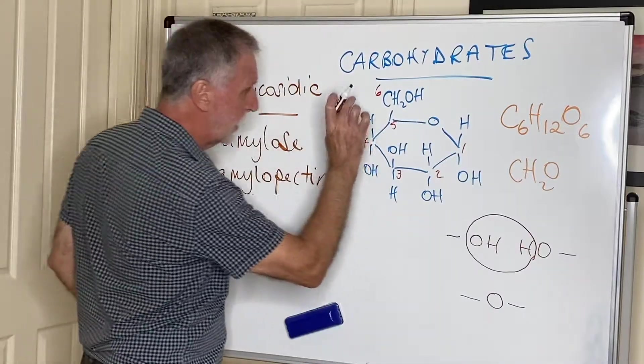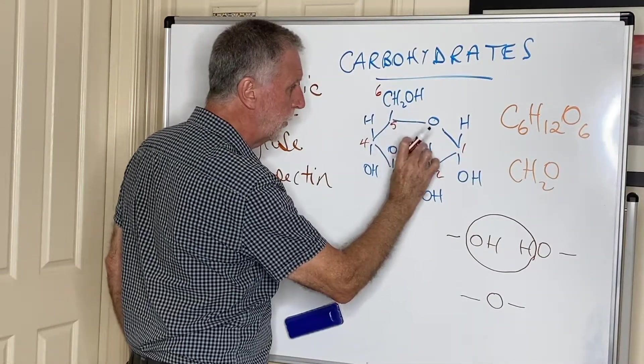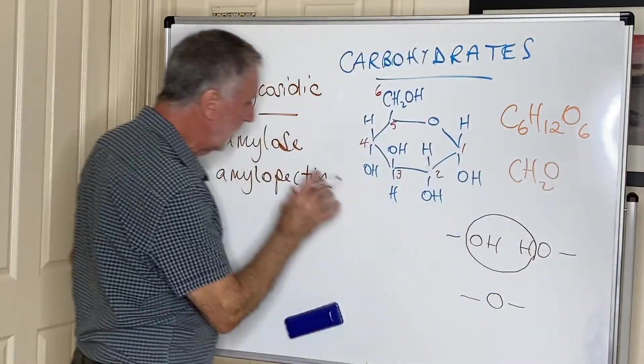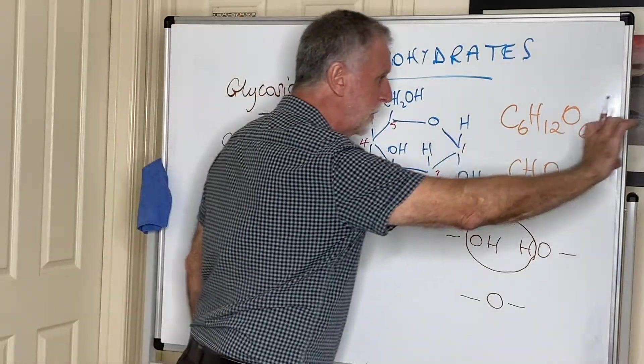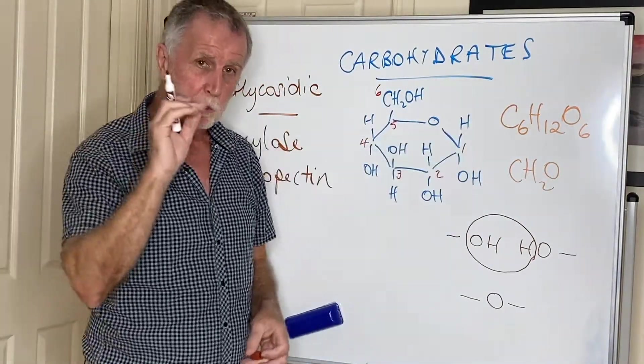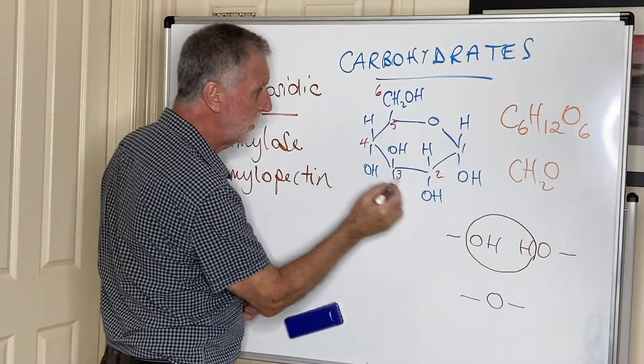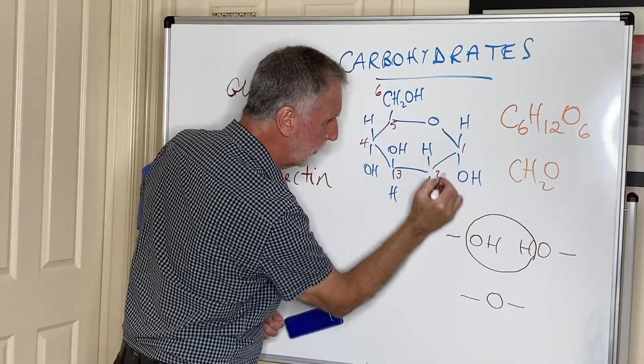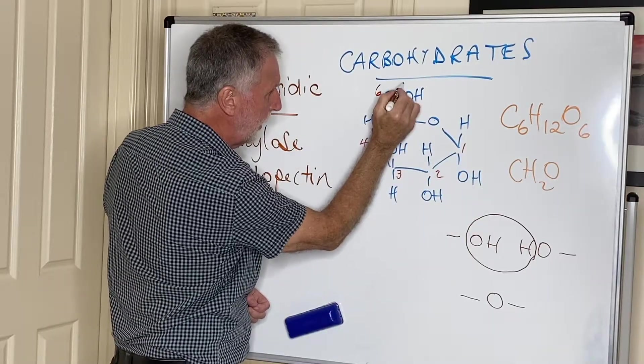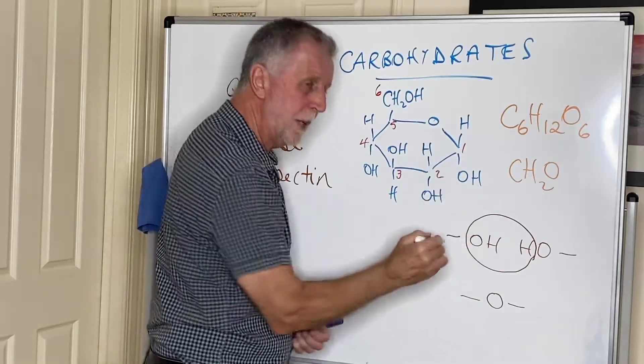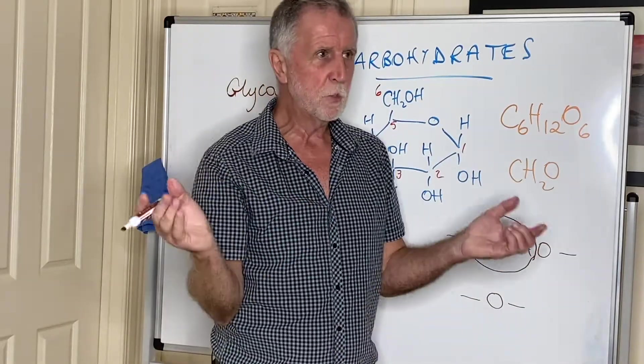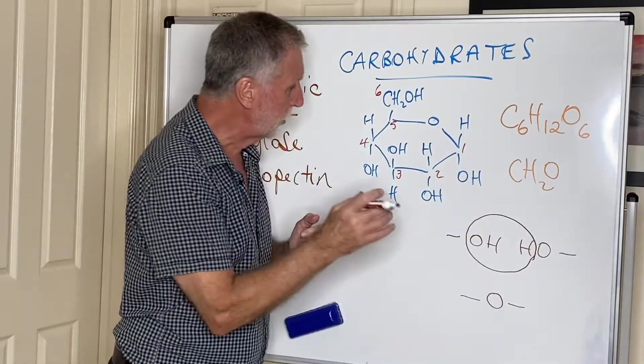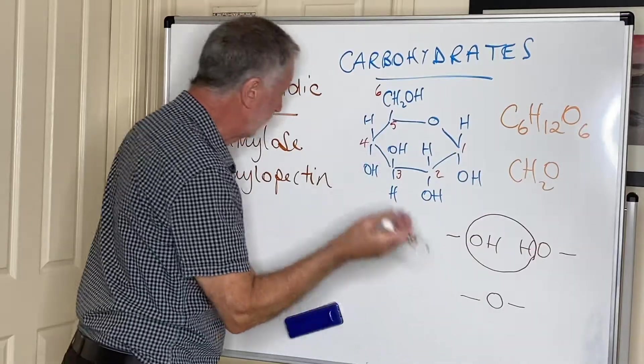Now amylose, as I say, is these alpha glucose units linked together over and over again. Amylopectin is very similar to amylose, a long chain of units, but it also includes one-six linkages. So every so often, this OH will link to that OH on a neighbor, and that will cause a branch to take place. It happens probably about every 25 or so units.